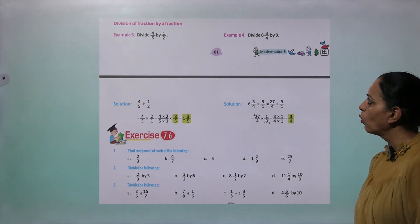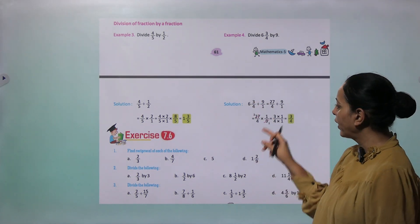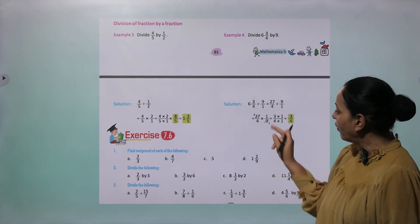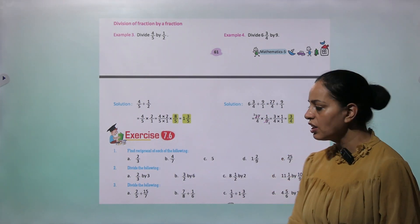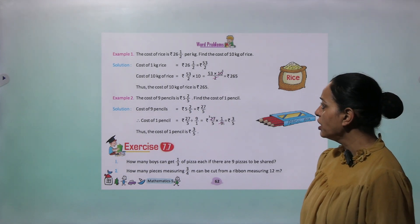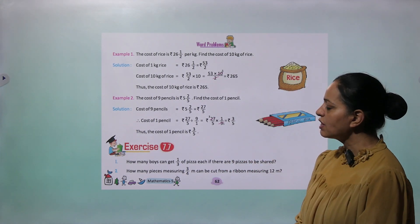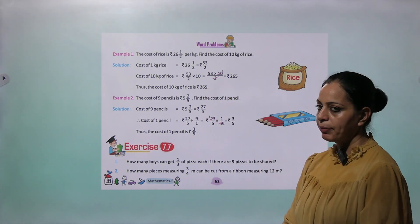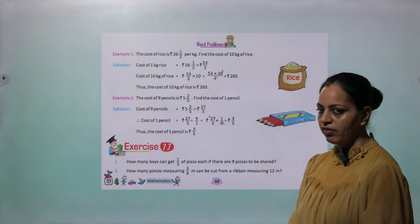Another example: Divide 6 whole 3 by 4 by 9. Change to improper fraction: 27 by 4 divided by 9 upon 1. Change division to multiplication and take reciprocal of 9, which is 1 by 9. Cancel 27 and 9 — answer is 3 by 4. Exercise 7.6 is given — you can enjoy it. Example 1: The cost of rice is rupees 26 whole 1 by 2 per kg. Find the cost of 10 kg. Change to improper: 53 by 2. Multiply by 10 — cancel 2 and 10 to get 5, then 53 into 5 equals rupees 265. So cost of 10 kg of rice is rupees 265.